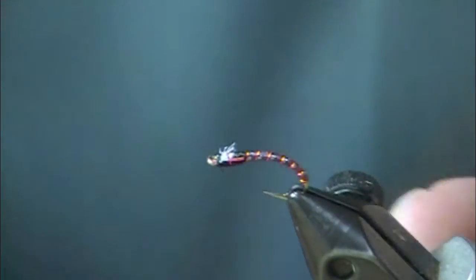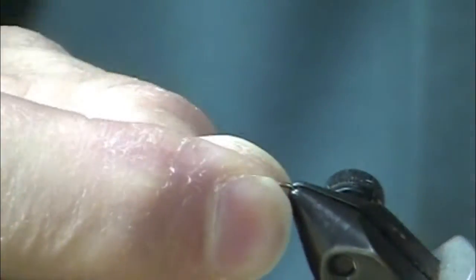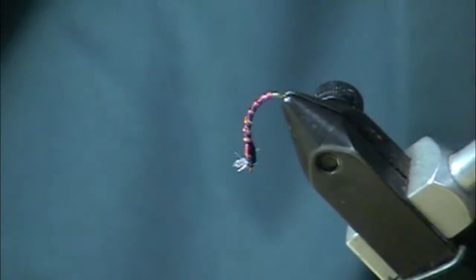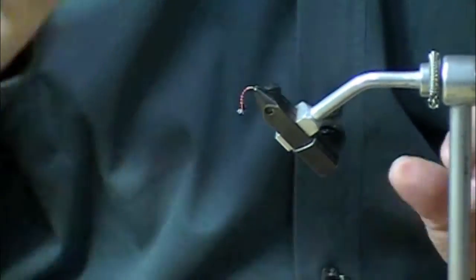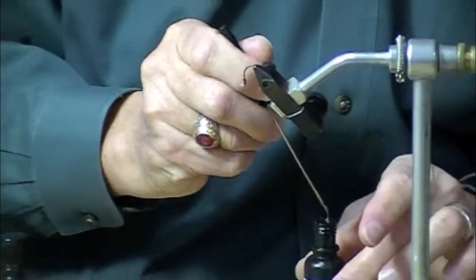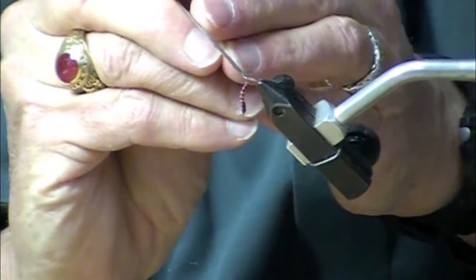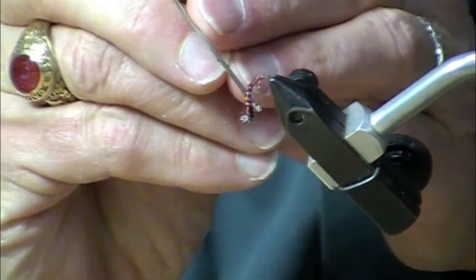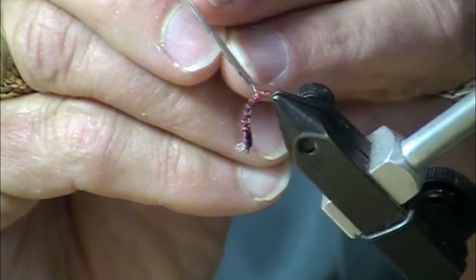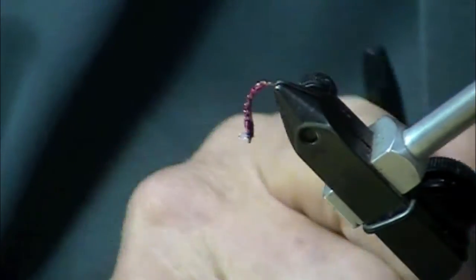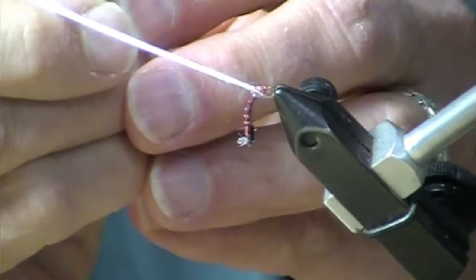They'll fluff out real nice and now we apply the Clear Cure Goo. I like to turn it down and we'll start with the thin. I use my bodkin instead of the needle. I think I get a little bit more control. Again, great product. You can always take some off, you can always add it, you can wipe it off if you want.